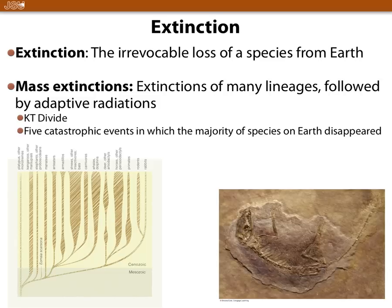Extinction is the irrevocable loss of species — irrevocable now. But in the future, DNA technology might allow us to clone some species. Not saying we will or won't, it's just something that might happen.